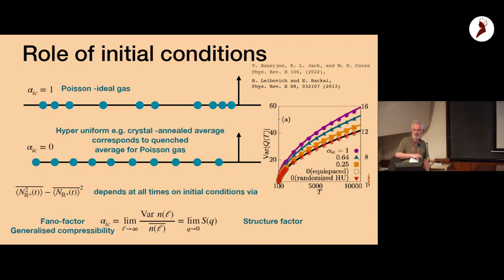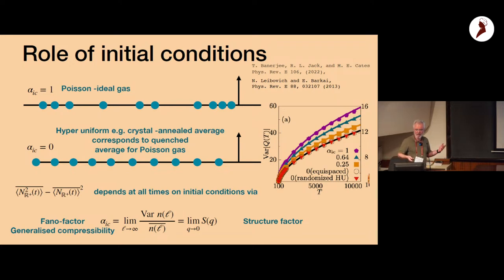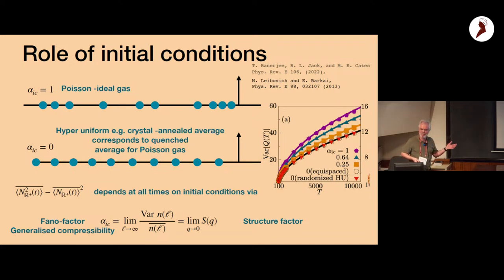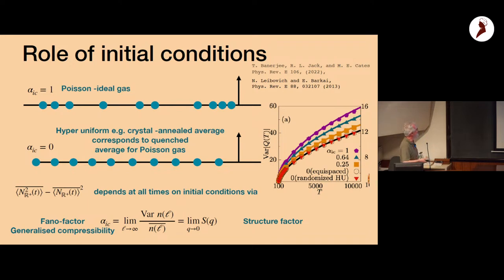The ideal gas corresponds to α = 1 and the hyperuniform case to α = 0, with numerical simulations showing a whole range of behavior in between. This is quite interesting: if you take a one-dimensional solid, heat it up, and count the particles as they diffuse out, you can tell whether it was a solid or a liquid just by looking at the vapor.